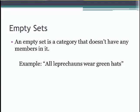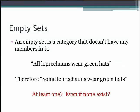Remember that an empty set is a category that doesn't have any members in it. So for instance, there are no leprechauns, so the category leprechaun being used in this claim is empty. Here's the problem: the I claim — some S is P, or in this example, some leprechauns wear green hats — means that there is at least one leprechaun that wears a green hat. But there aren't any leprechauns, so the statement is actually false.